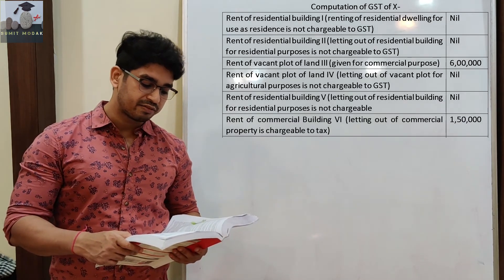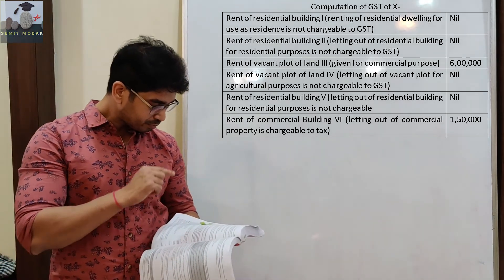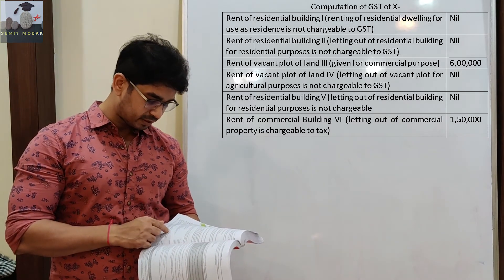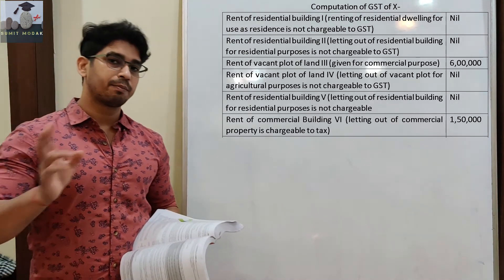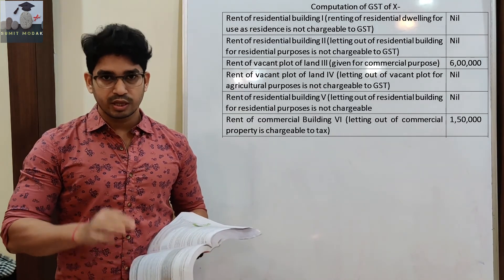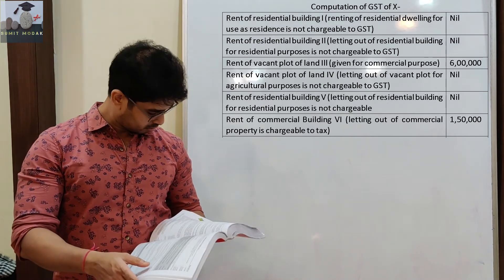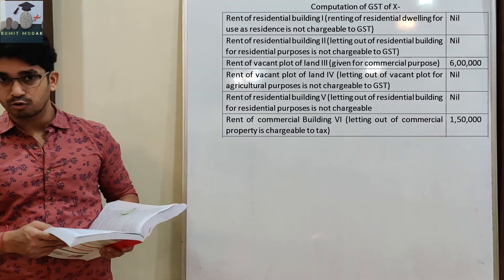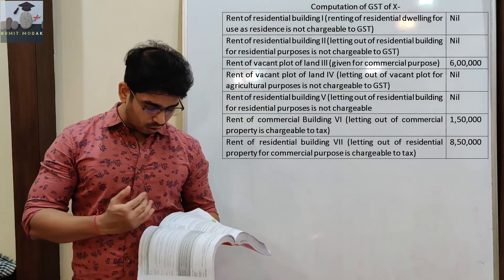Rent of residential building 7 - this building is situated in a residential area but is used for commercial purposes. The purpose for which the property is used - that matters. Where it is located does not matter. So in this case, Mr. X has given the property and the tenant is using it for commercial purposes. The rental amount is Rs. 8,50,000, so it is chargeable to tax and included in the taxable column.